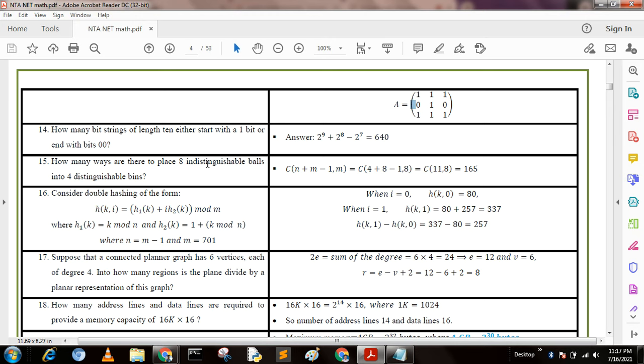Next question: How many bit strings of length 10 either start with a 1 bit or end with 00? One bit means from 10 bits, start with 1 which is 2^9, and end with 00 means 2^8.